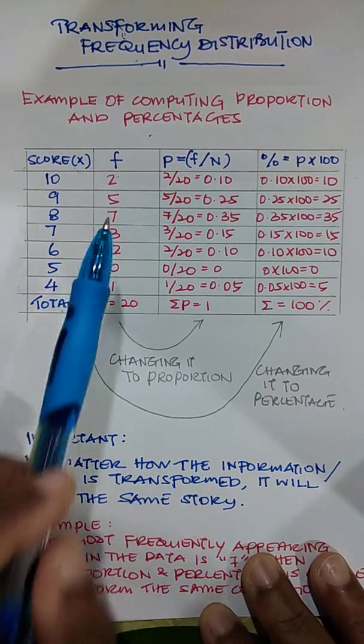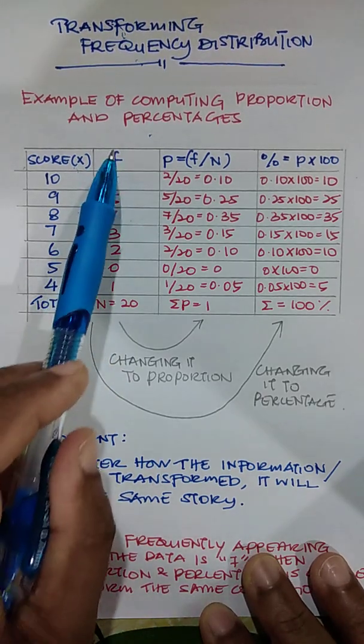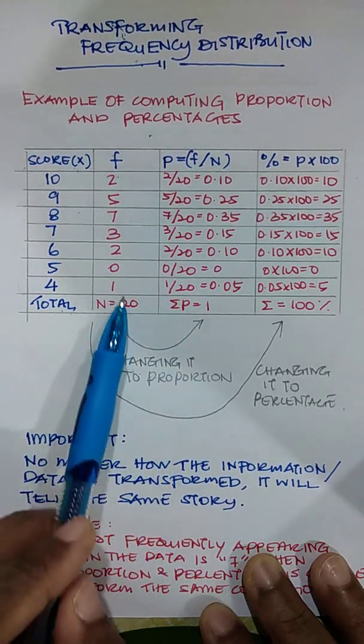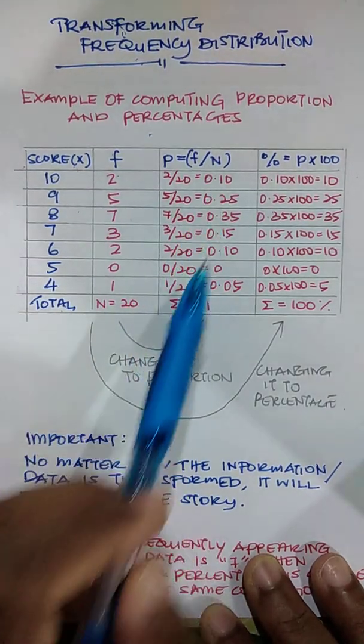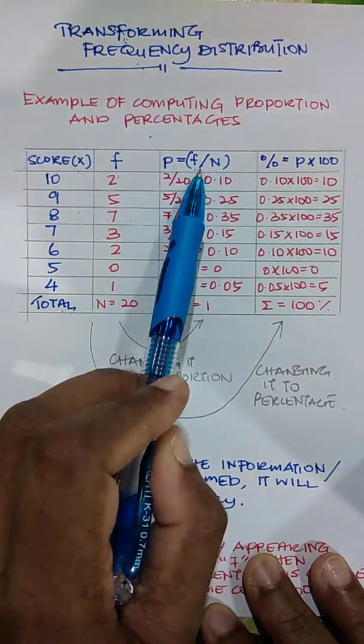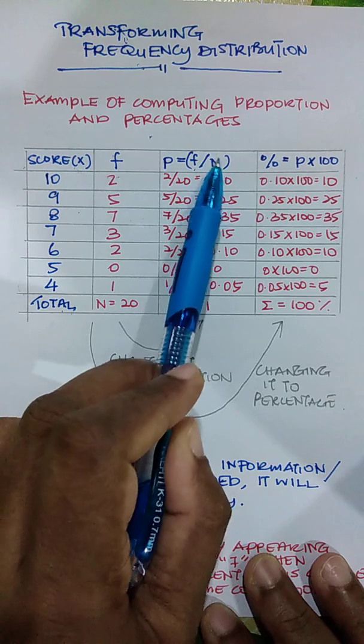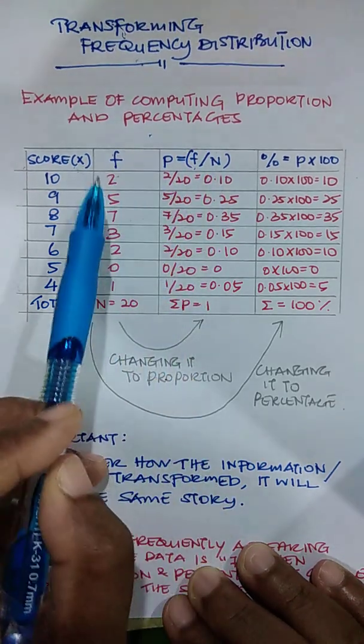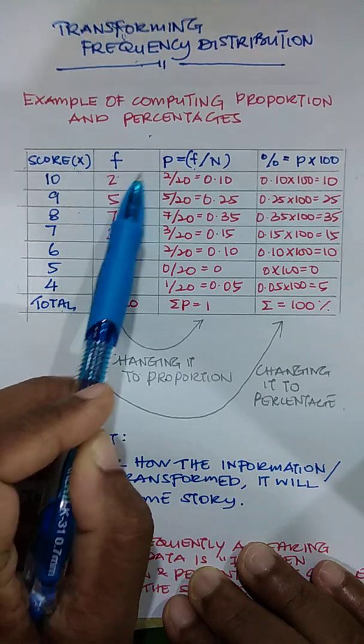So what we do here is we transform the frequencies into proportion. We are changing the format. So how do we get the proportion? It is the frequency divided by the N. N is the total observation that we have in the data. So frequency over N.